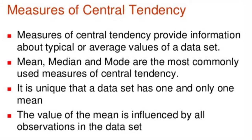Measurement of central tendency provides information about the typical or average value of the data. In measures of central tendency, three things are included: mean, median, and mode. It is unique that a dataset has one and only one mean. The value of mean is influenced by all the observations in the data, so from the mean you can decide what type the data is.